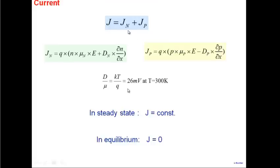Current has two components, one due to electrons and the other due to holes. Each current component has two parts: a drift part (n·μ·E) and a diffusion part (D_n · dn/dx). Similarly for hole current, we have drift and diffusion parts. The diffusion constant and mobility are related through Einstein's relationship: D/μ = kT/q, which is about 26 millivolts at room temperature.